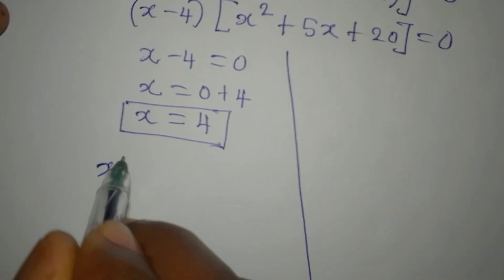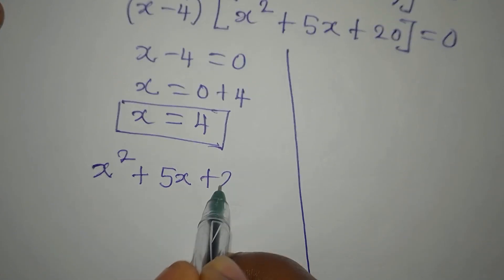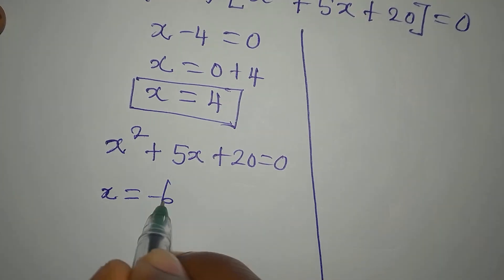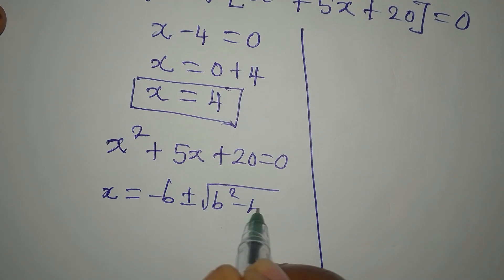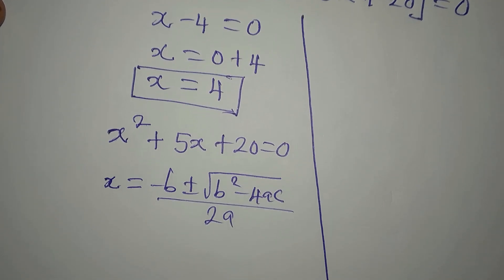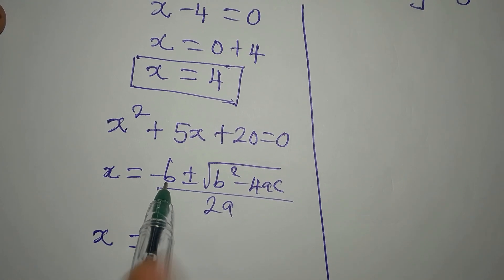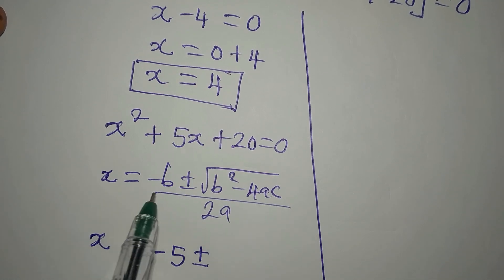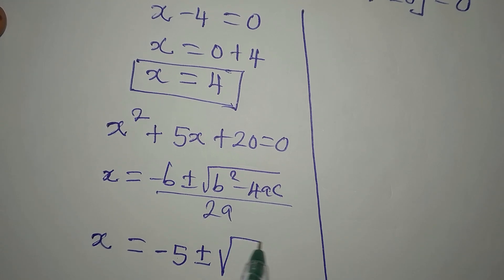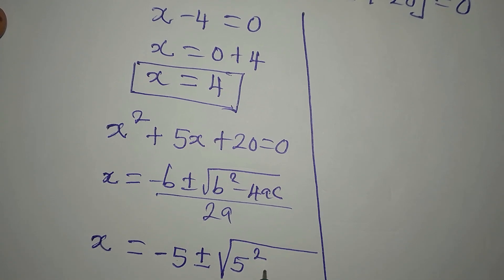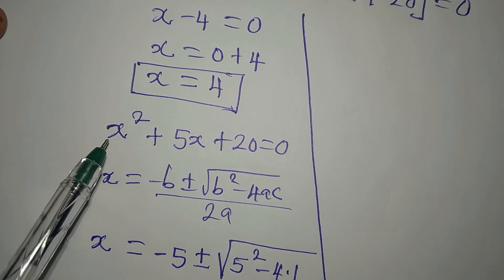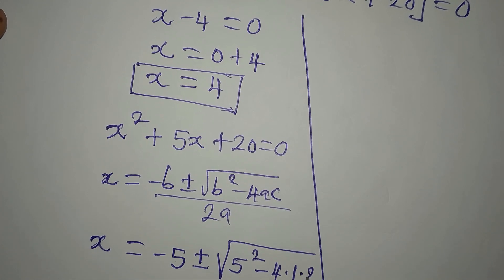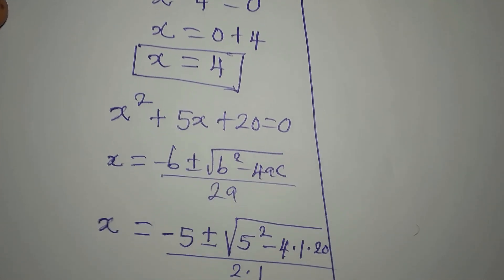We now solve x² + 5x + 20 = 0 using the quadratic formula: x = (-b ± √(b² - 4ac)) / 2a. Here b = 5, a = 1, and c = 20. So x = (-5 ± √(5² - 4 × 1 × 20)) / (2 × 1).